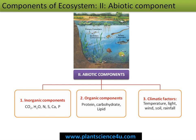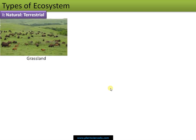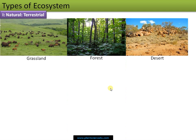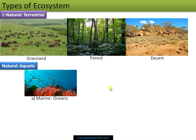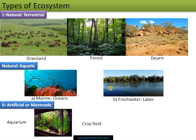Moving into the different types of ecosystem: ecosystems can be classified into natural, which includes terrestrial ecosystems like grassland, forest, desert, tundra, taiga, tropical rainforest, prairies, savannas, etc. There is also aquatic ecosystem, including marine/ocean or freshwater ecosystems like lakes, rivers, and ponds. Then there is artificial or man-made ecosystem — a classic example is an aquarium, and also crop fields. Hope things are clear — thank you so much for your support.